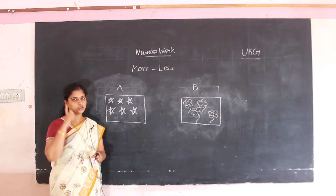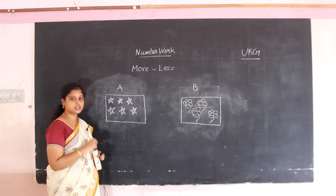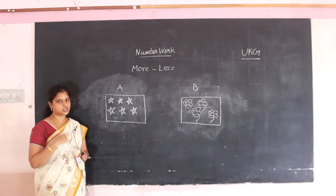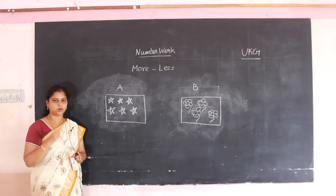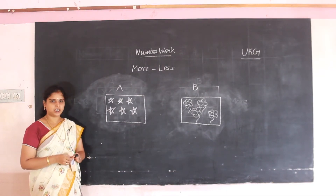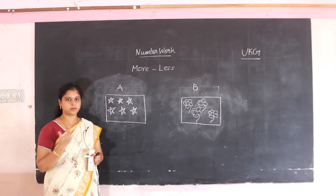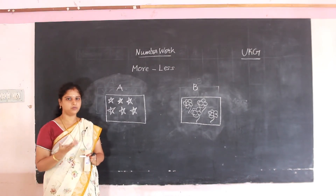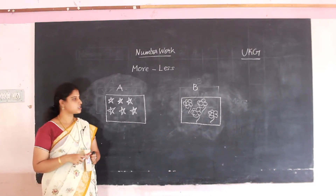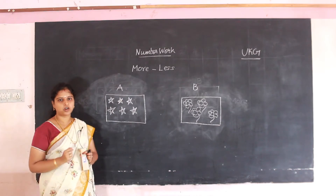When will you see the stars in the sky? You can see the stars in the sky during night time only. There are different types of flowers — different shapes and different colors of flowers. Stars are in box A, and flowers are in box B.